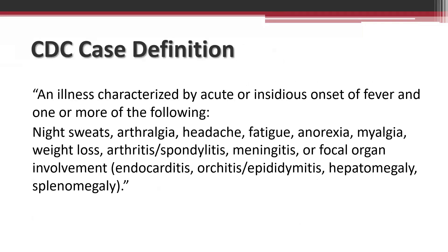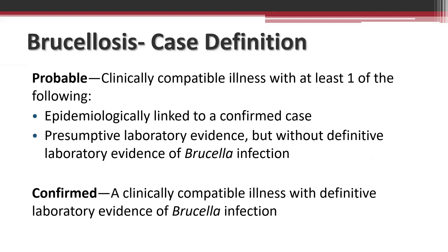Looking at the CDC definition, they define it as an illness characterized by acute or insidious onset of fever and one or more of the following: night sweats, arthralgia, headache, fatigue, myalgia, weight loss, arthritis, meningitis, or focal organ involvement — a very broad definition. Cases can be divided into probable or confirmed. Probable cases have a clinically compatible illness with epidemiological linkage to a confirmed case or presumptive lab evidence without definitive lab evidence.